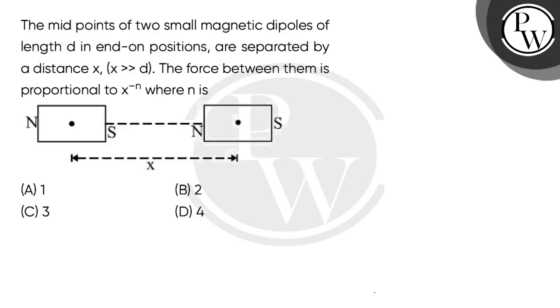Let's read the question. The midpoints of two small magnetic dipoles of length d in end-on positions are separated by a distance x, where x is much larger than d. The force between them is proportional to x to the power minus n, where n is: